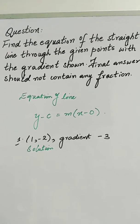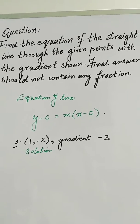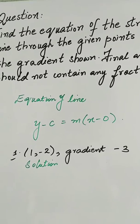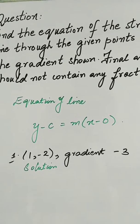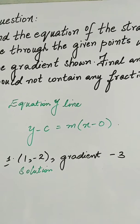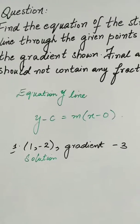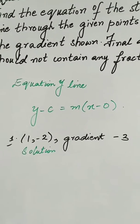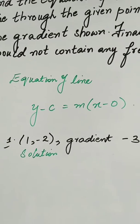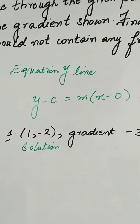We have another question in which we have to find the equation of the straight line with the help of given coordinates and gradient. From the formula, the equation of line is y - y₁ = m(x - x₁). In the first question, we have coordinates (1, -2) and gradient = -3.